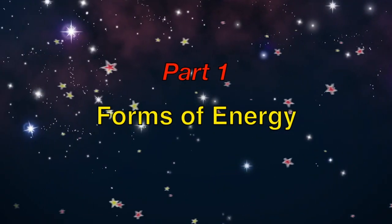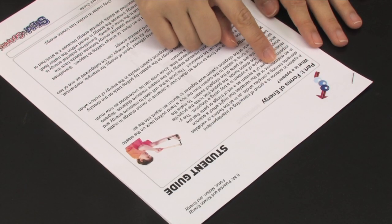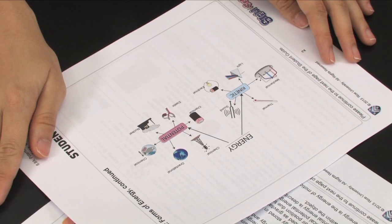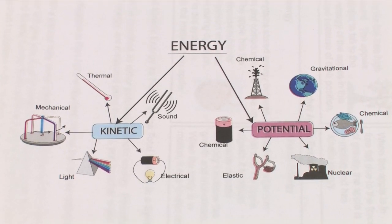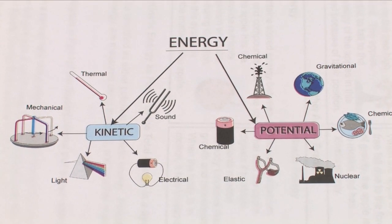Part one: forms of energy. Students will read the student guide as a class and study the diagram in part one. They will then discuss with a partner why the examples in the diagram represent potential or kinetic energy.